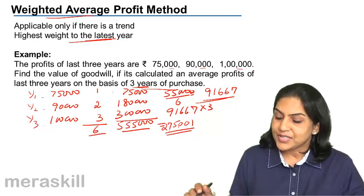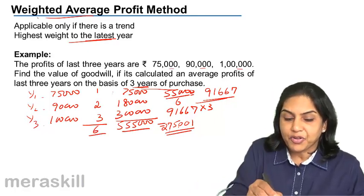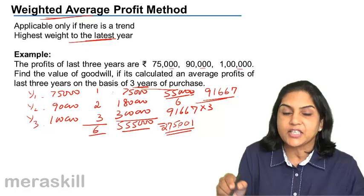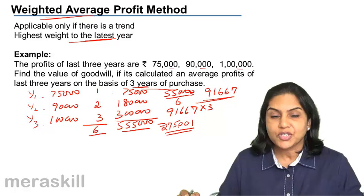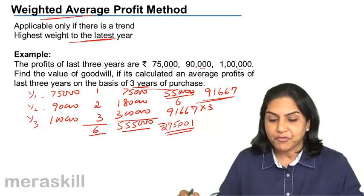So it's the same method as the previous one, except that in case of a trend we use weighted average profits instead of simple average profits.